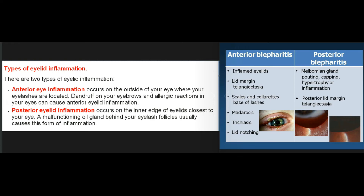Types of eyelid inflammation: Anterior eyelid inflammation occurs on the outside of your eye where your eyelashes are located — dandruff on your eyebrows and allergic reactions can cause this type. Posterior eyelid inflammation occurs on the inner edge of eyelids closest to your eye, and a malfunctioning oil gland behind your eyelash follicles usually causes this form.